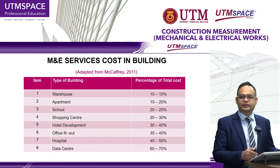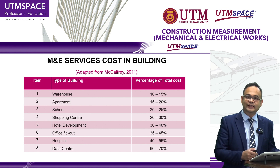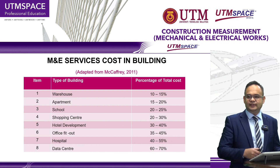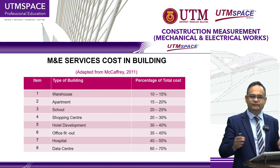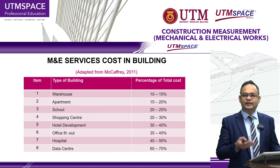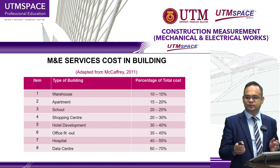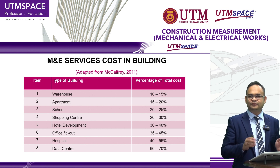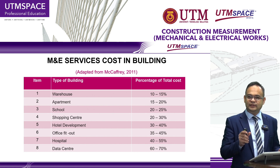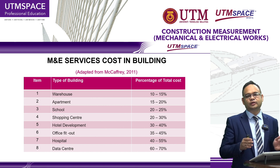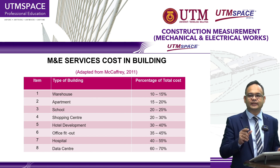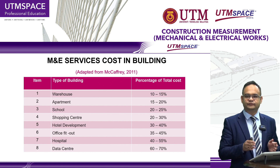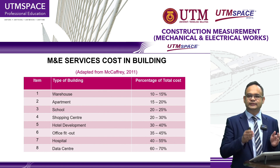Based on our research, adapted from McCaffrey in 2011, you can see in this table — numbers one to eight — the average cost of M&E services in buildings. For example, in schools the cost of M&E is about 20% to 25%. For hotel development, the cost is about 30% to 40%. Hospitals are 40% to 45%. And for data centres, especially telecommunications data centres, the cost is about 60%. This is quite a huge amount of construction costs in the building sector.